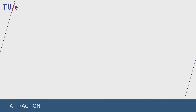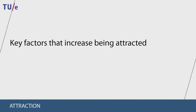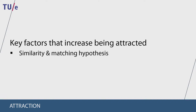Attraction occurs when we tend to like others based on their appearance or behavior. Several key factors can increase the probability of us being attracted to another person. First, we tend to be attracted to people who appear or behave similar to us. The matching hypothesis states that people who are similar are likely to end up together. Reciprocation leads to attraction because if a person returns a favor we see them as someone who is more similar to us.